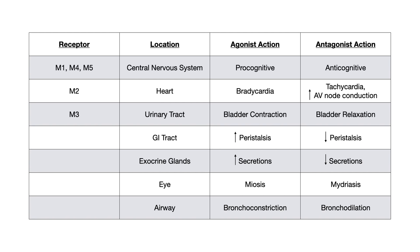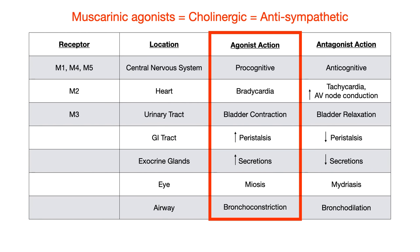Let's pause and try to keep things straight. Looking at all the agonist actions together: muscarinic agonists equal cholinergic effects, which equal anti-sympathetic effects. When you give somebody an agonist you're turning on a muscarinic receptor, allowing acetylcholine to do its natural job. The clinical effects are: pro-cognition, bradycardia, bladder contraction causing urination, increased peristalsis, increased secretions, miosis, and bronchoconstriction.